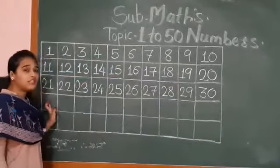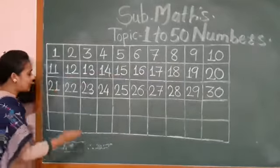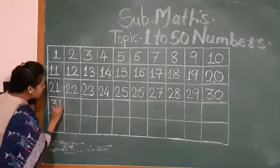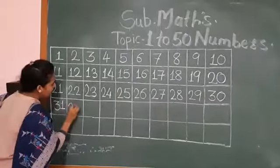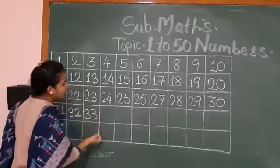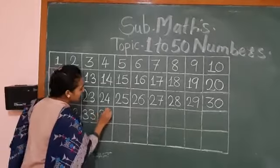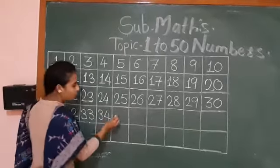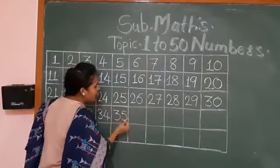Again, here. Three tenth one, thirty-one. Three tenth one, thirty-one. Three tenth two, thirty-two. Three tenth three, thirty-three. Three tenth four, thirty-four. Three tenth five, thirty-five.